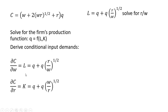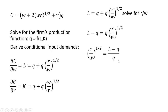Let's take our conditional input demand for labor, and we're going to solve it for R divided by W. Moving Q over to the left-hand side and dividing through by Q. Then squaring both sides, we have an expression for R divided by W.